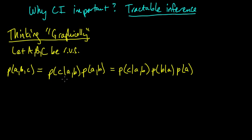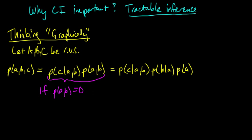A neuron should be firing saying: what if P(a, b) is zero? Then the conditional probability is not defined. But if P(a, b) = 0 we interpret the product as zero, because the joint distribution is zero in that case — so it's a sensible thing to do. The main point is we can always factor in this way. Let's think about what graph we might associate with this particular factorization.